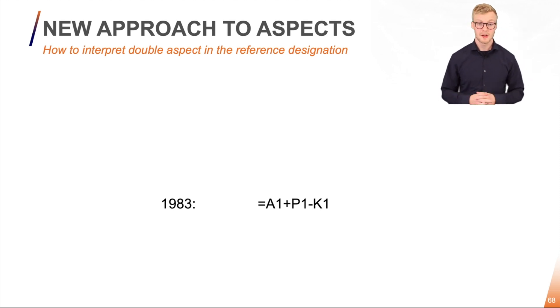So in the 1980s, it was quite common to mix the different kinds of aspects. So for example, here we have an overall function, =A1, the location, +P1, and then lastly, the component, -K1, which was combined into one complete reference designation.